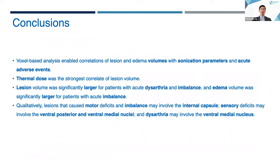In conclusion, voxel-based analysis enabled correlations of lesion and edema volumes with sonication parameters and acute adverse events. Thermal dose was the strongest correlate of lesion volume. Lesion volume was significantly larger for patients with acute dysarthria and imbalance, and edema volume was significantly larger for patients with acute imbalance. Qualitatively, lesions causing motor deficits and imbalance may involve the internal capsule, sensory deficits may involve the ventral posterior and ventral medial nuclei, and dysarthria may involve the ventral medial nucleus.